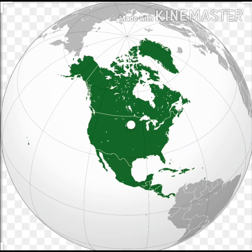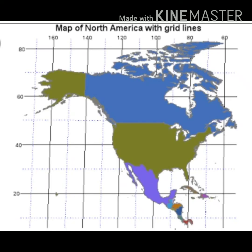It extends from north to south on 7 degrees north to 83 degrees north latitude. As we have already discussed that it is in the Northern Hemisphere, both latitudes will come with north. And from east to west, it extends from 53 degrees west to 180 degrees west longitude.